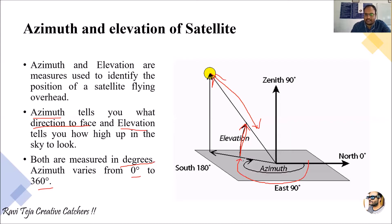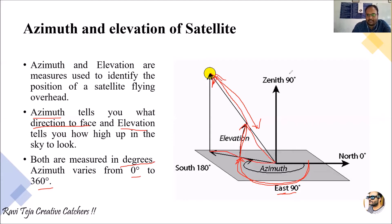Both angles are measured in degrees. Azimuth varies from 0 degrees to 360 degrees, measured from north towards east. Elevation also varies — around 45 degrees from the earth station towards the satellite.